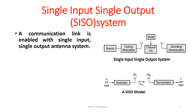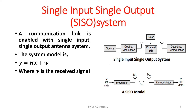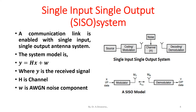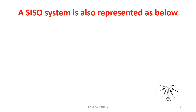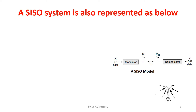A communication link is enabled with a single input, single output antenna system. The system model is Y = HX + W, where Y is the receiver signal, H is the channel, and W is AWGN — that is, additive white Gaussian noise component.